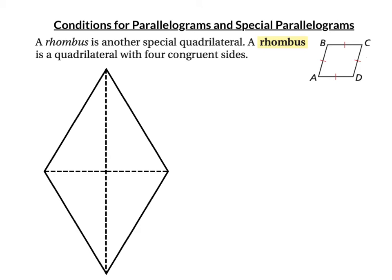A rhombus is a quadrilateral with four congruent sides. Since a square has four congruent sides, a square is a rhombus. A rhombus gets its properties from its diagonals. Since opposite sides are congruent, it's a parallelogram, and in a parallelogram the diagonals bisect each other. Look at the four triangles the diagonals create — all four have the same side marks (one, two, and three marks), so all four triangles are congruent by side-side-side.